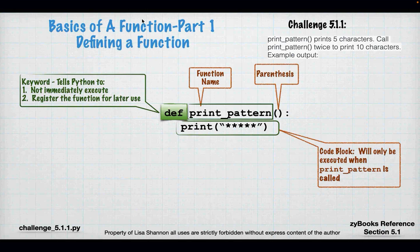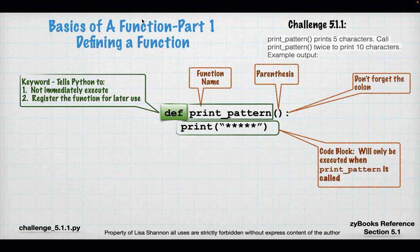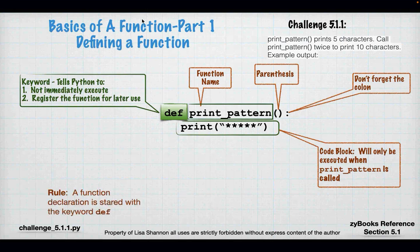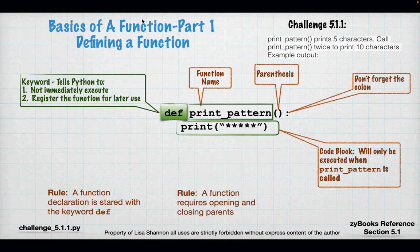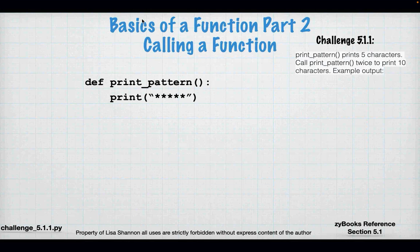We also have the parentheses, which are very important. As with everything to do with parentheses in Python, they have to be balanced — you need an opening left parenthesis and a closing right parenthesis. And because we're dealing with code blocks, we have to have a colon. If you don't end with a colon, everything's going to be wrong. A function declaration is always started with `def`. If you don't start it with `def`, you don't have a function definition. You also have to have the parentheses.